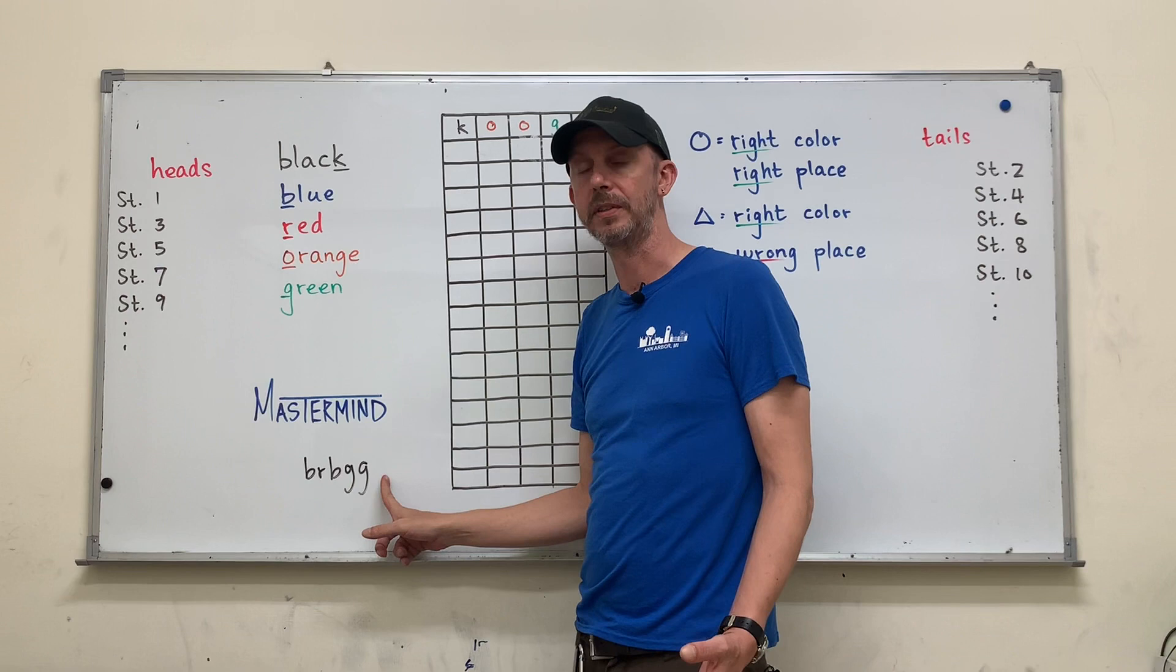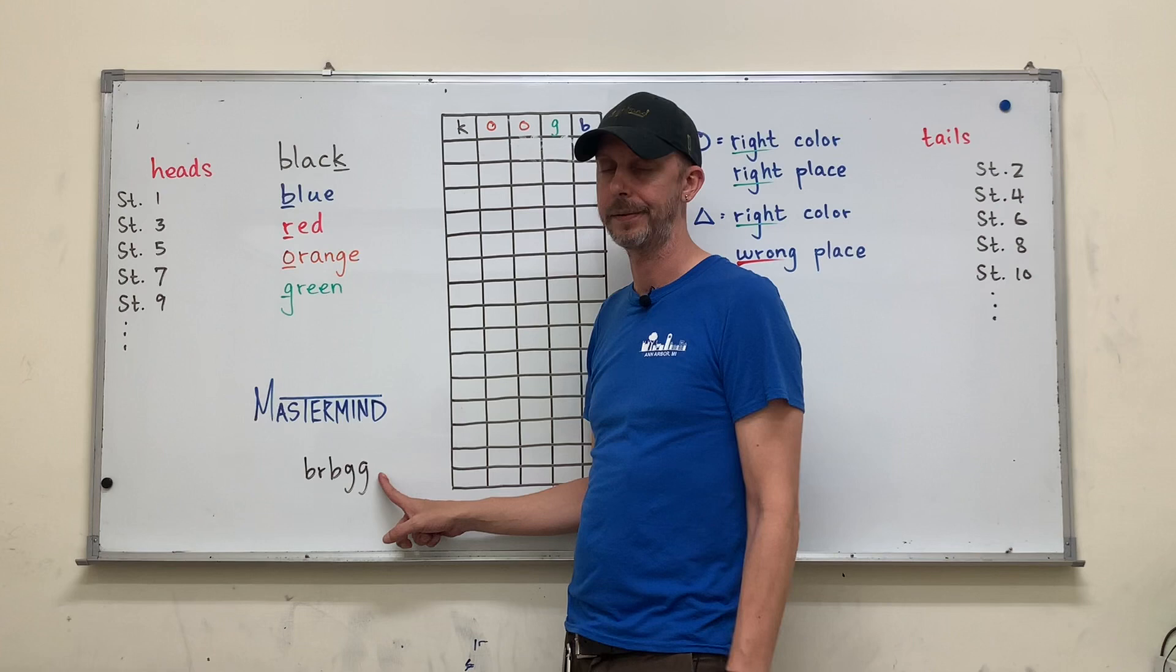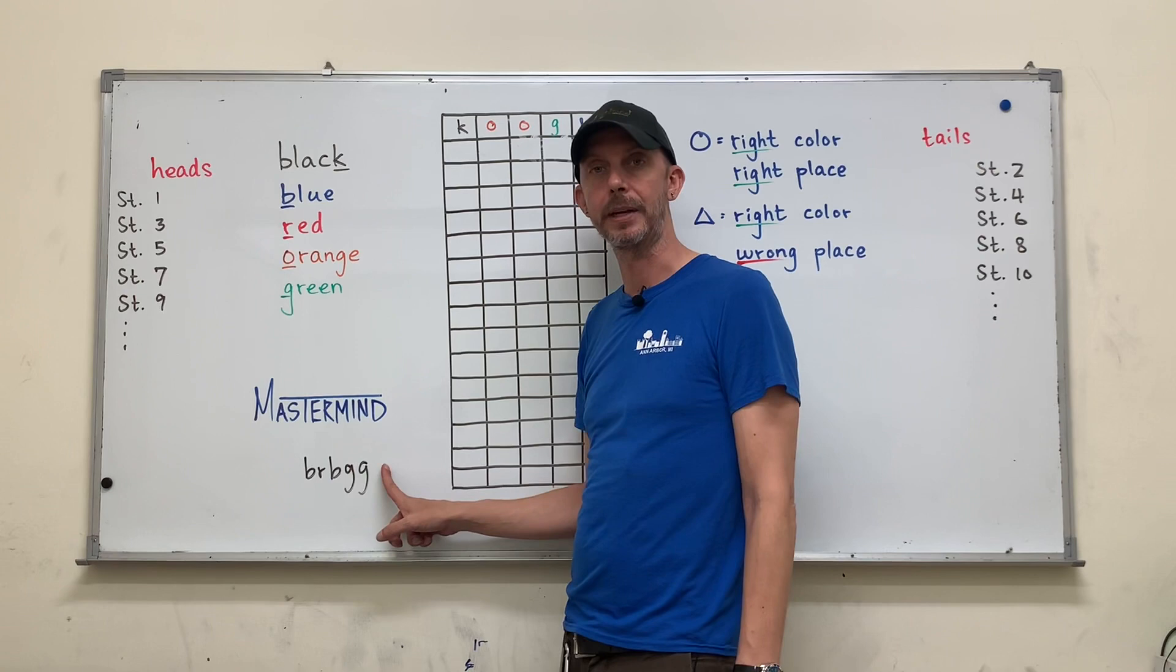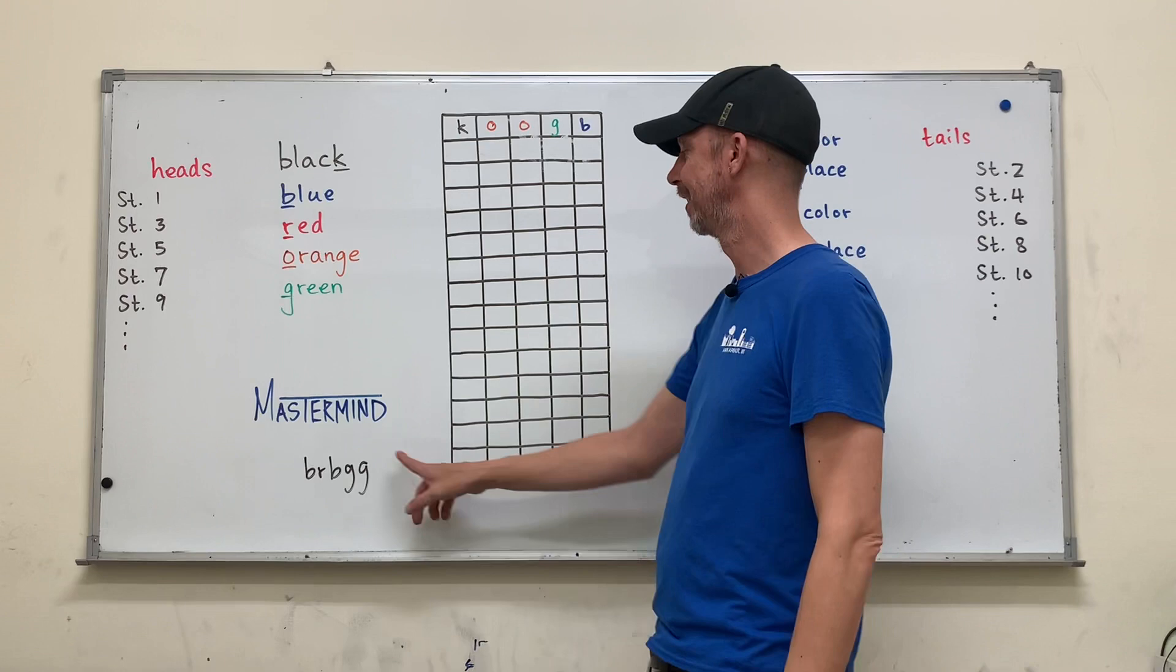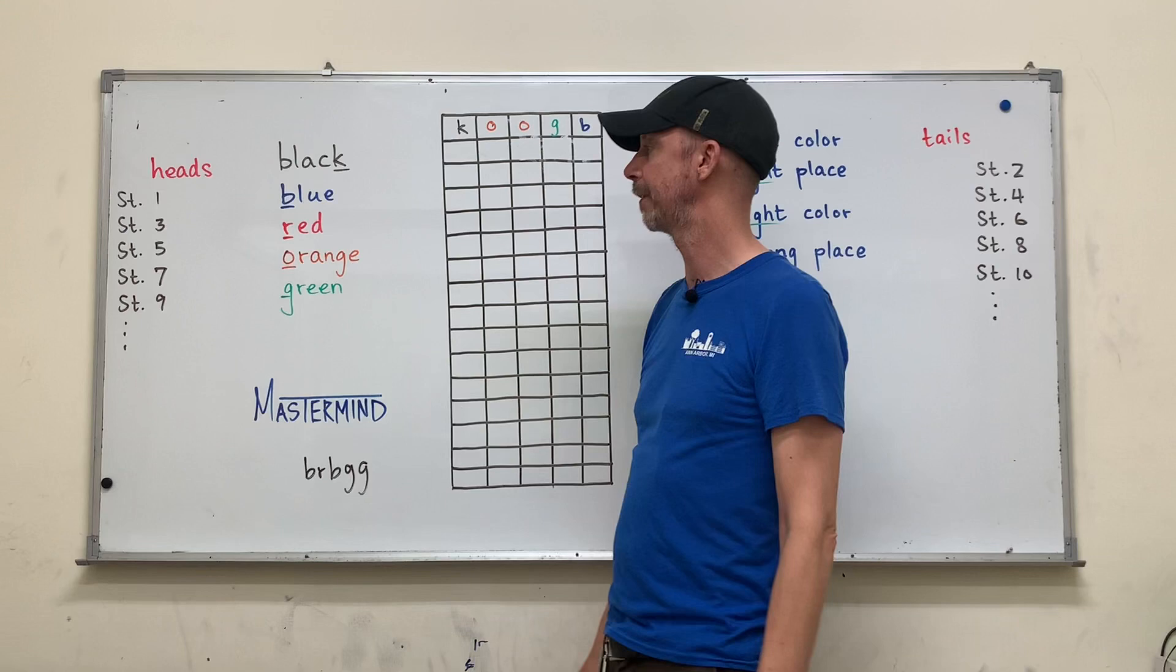So the way we're going to do this in our class is that you the teacher are going to be the mastermind and come up with your own secret code. Now you won't write it on the whiteboard. I've done that so that we don't get lost. But this would be in your lesson plan or if you just want to try to remember it, write it down. And the students need to try to guess this using the colored markers or chalk that you have at your disposal.